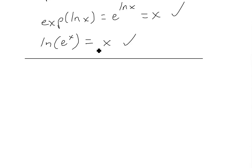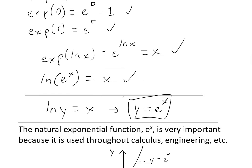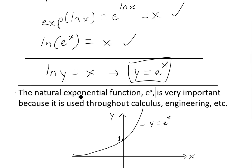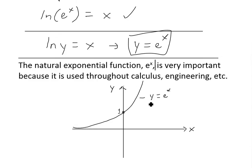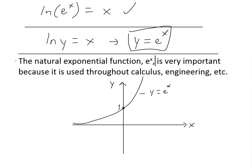Based on all of this, we can now define it: for ln(y) equals x, the inverse is y equals e to the x. I also want to state that the natural exponential function e to the x is very important because it is used throughout calculus and engineering — in fact, it is one of the most used functions of all time. It's important to understand its graph, which looks like any other exponential function, except this number e is very important for the derivative.